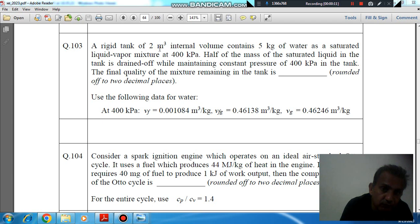A rigid tank of 2 meter cube internal volume contains 5 kg of water as a saturated liquid vapor mixture at 400 kPa. Half of the mass of saturated liquid in the tank is drained off while maintaining constant pressure of 400 kPa in the tank.